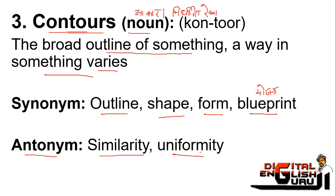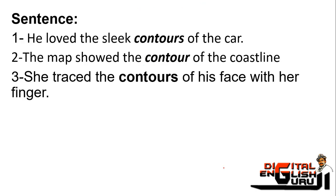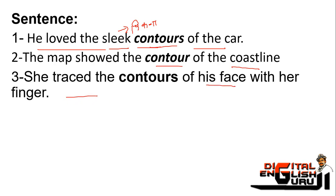Antonyms of contour are similarity and uniformity — meaning things that look alike or are uniform. In sentences: He loved the sleek contours of the car. The map showed the contour of the coastline — its boundary line. She traced the contours of her face with her fingers. So contours means shape, outline, or boundary.